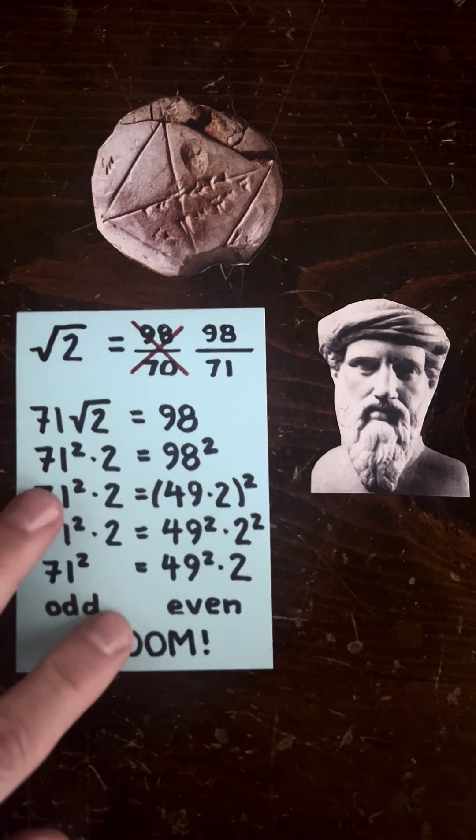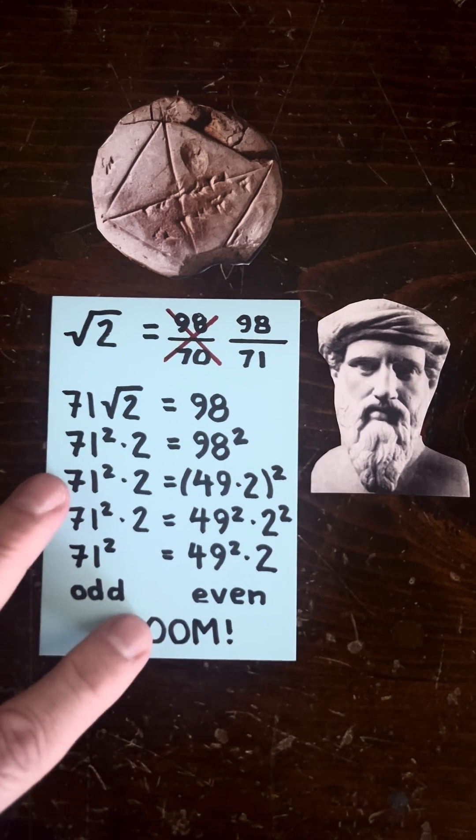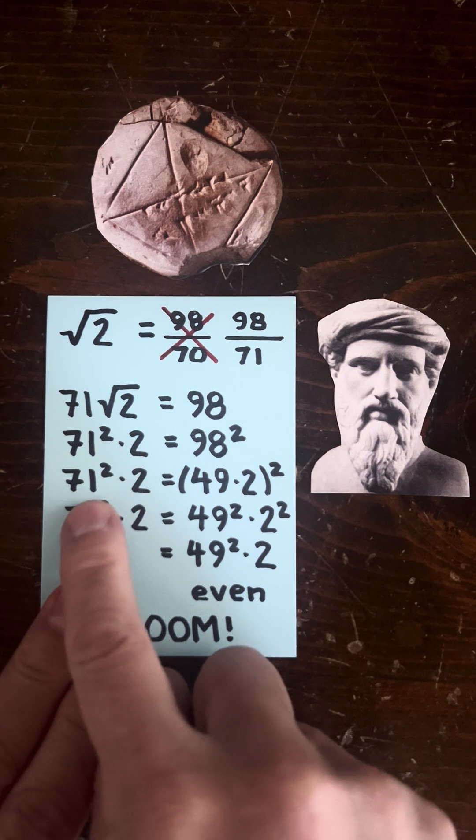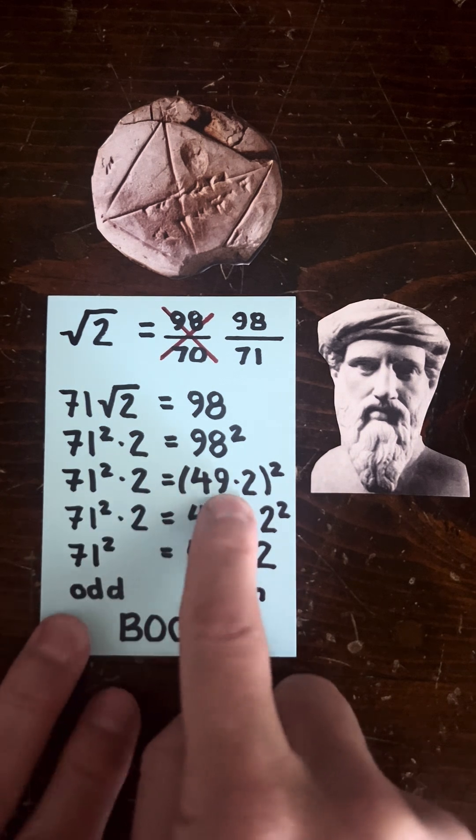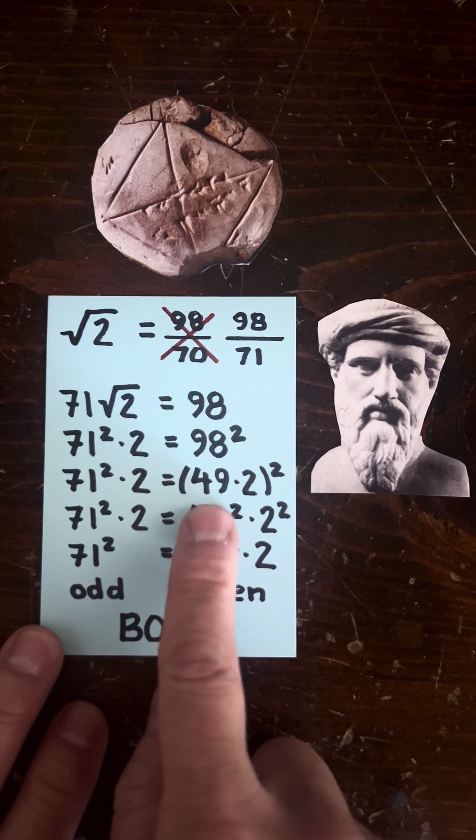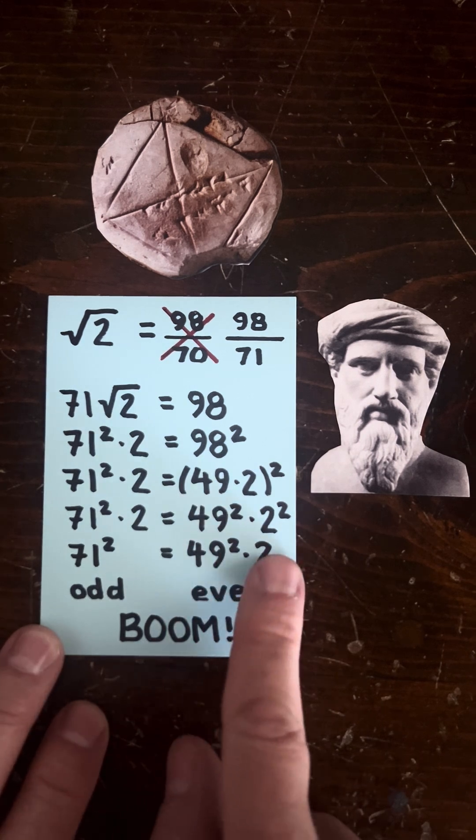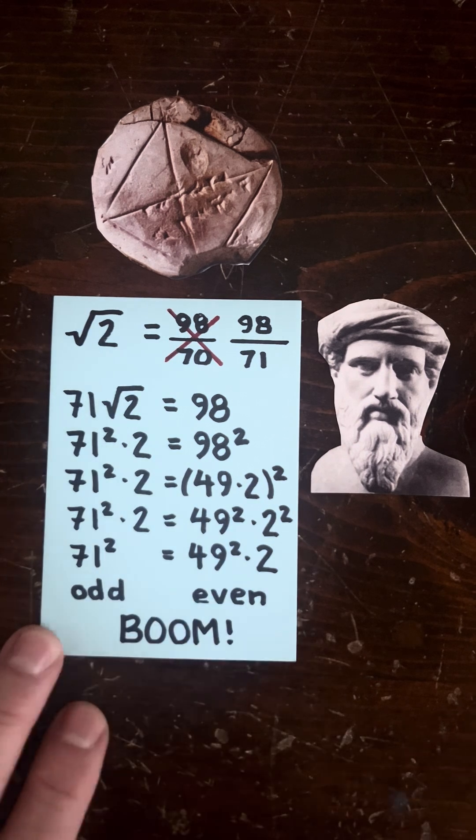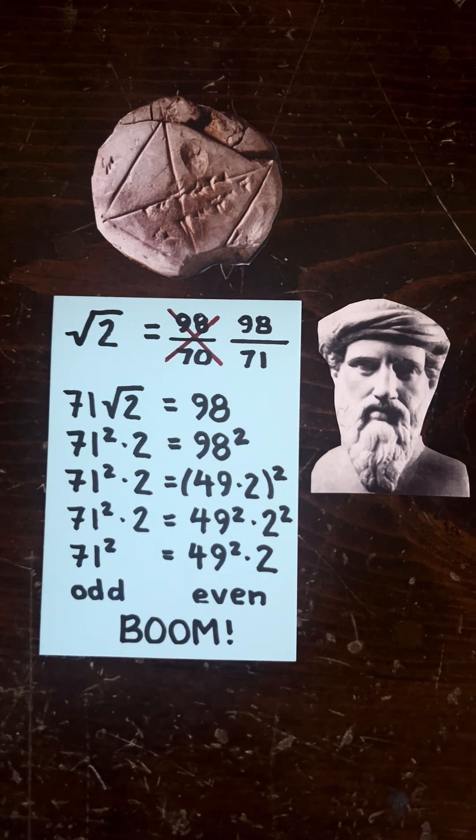And then the Babylonian could say, hey, it's 98 over 71. That's what I really meant to say. And now this is an even number, but this is also an even number. But now we can say 98² = 49 × 2² or 49² × 2². And we can cross out one of these twos. And now the left-hand side is odd and the right-hand side is even.